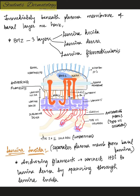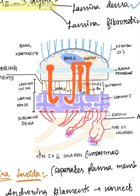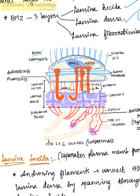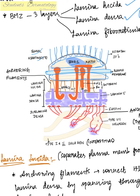Immediately beneath the basal layer, the basement membrane zone has three layers: lamina lucida, lamina densa (also called basal lamina), and the lamina fibro-reticularis. The basal keratinocyte has keratin filaments associated with bullous pemphigoid antigen 1 and plectin of the hemidesmosomes. The inner block of the hemidesmosome is attached to BP antigen 1 and plectin, while the outer block contains IFAP300 and p200.